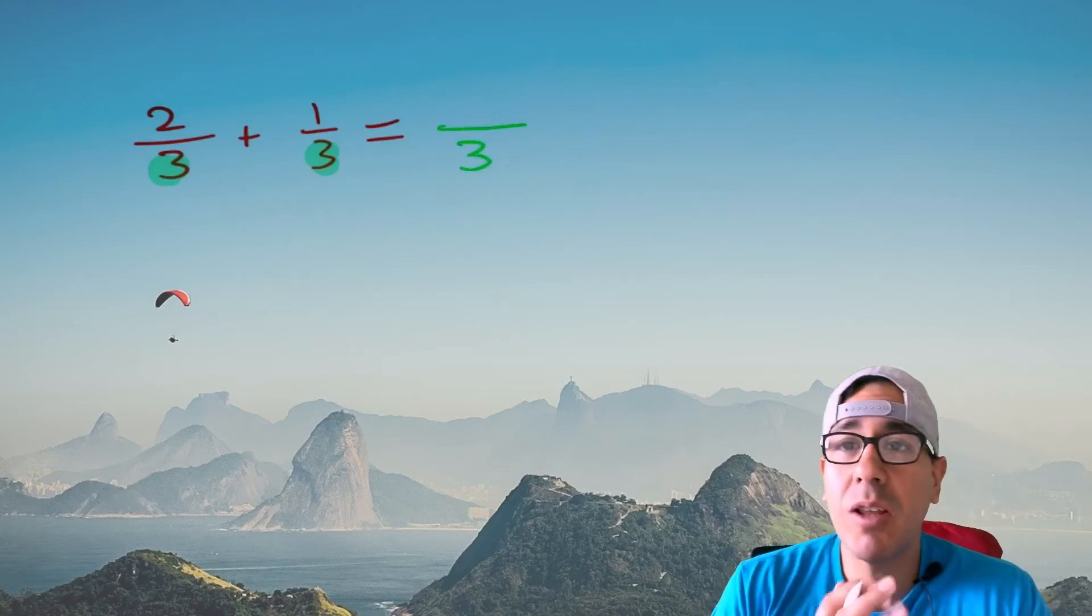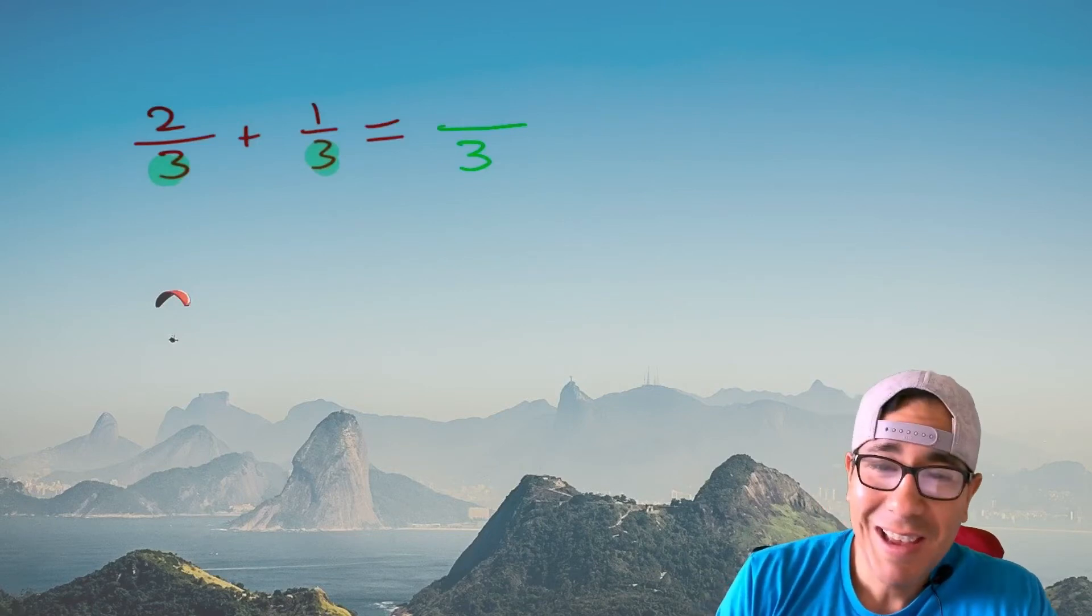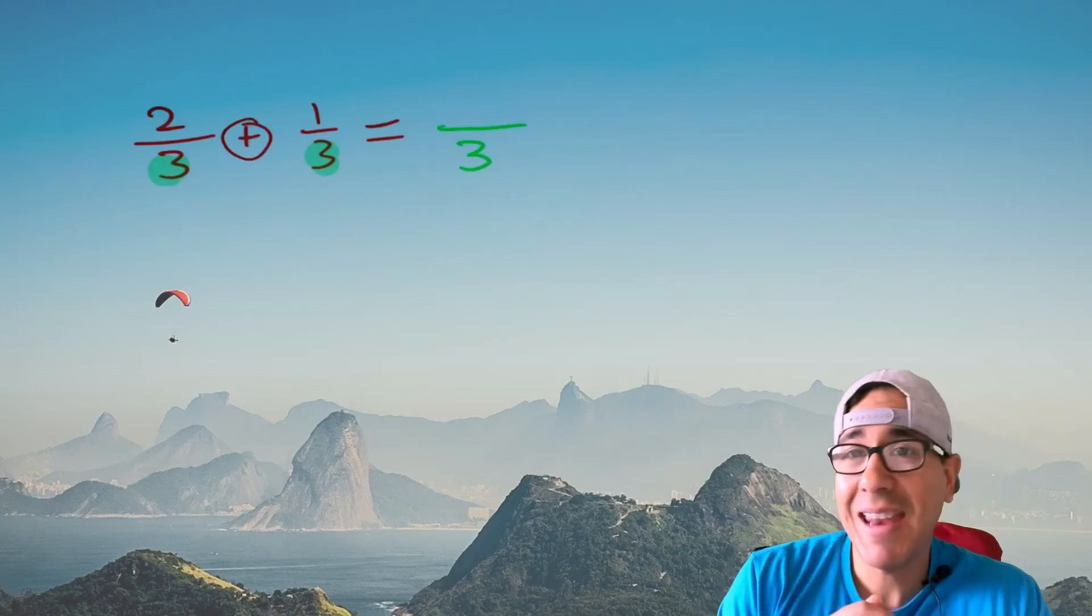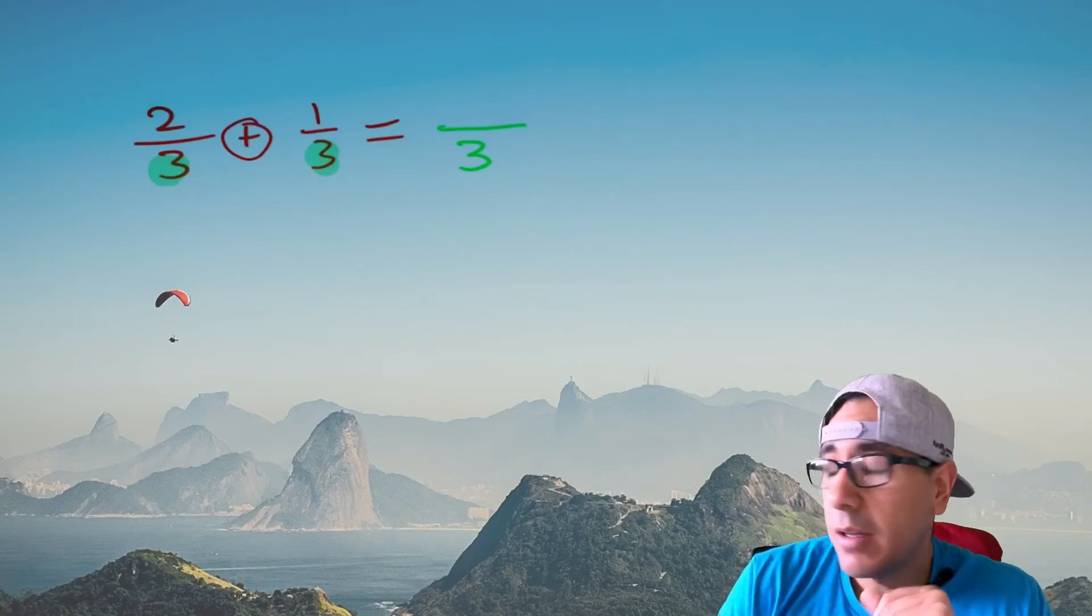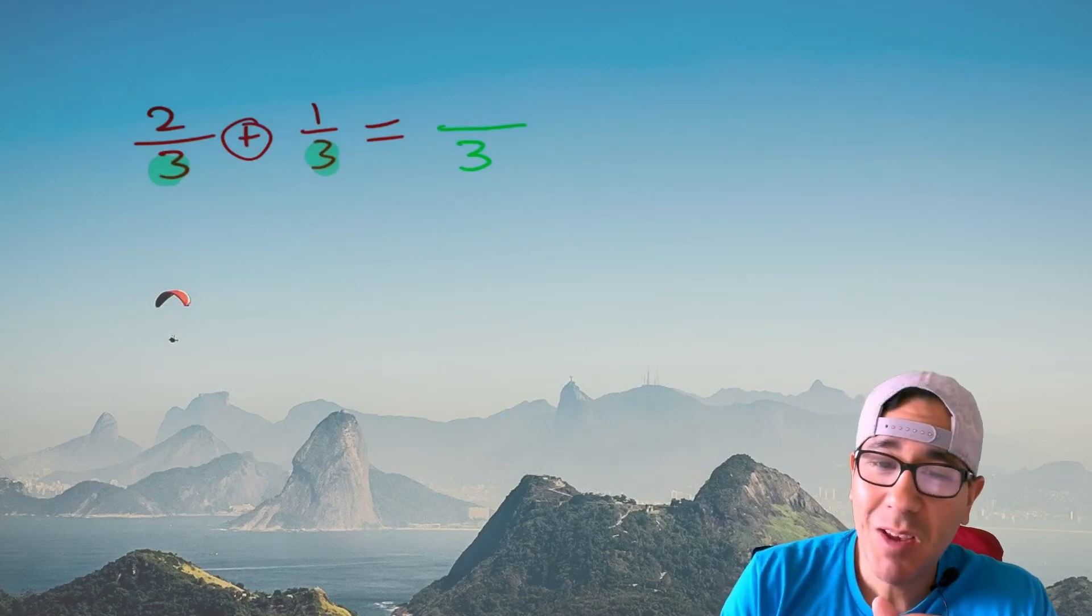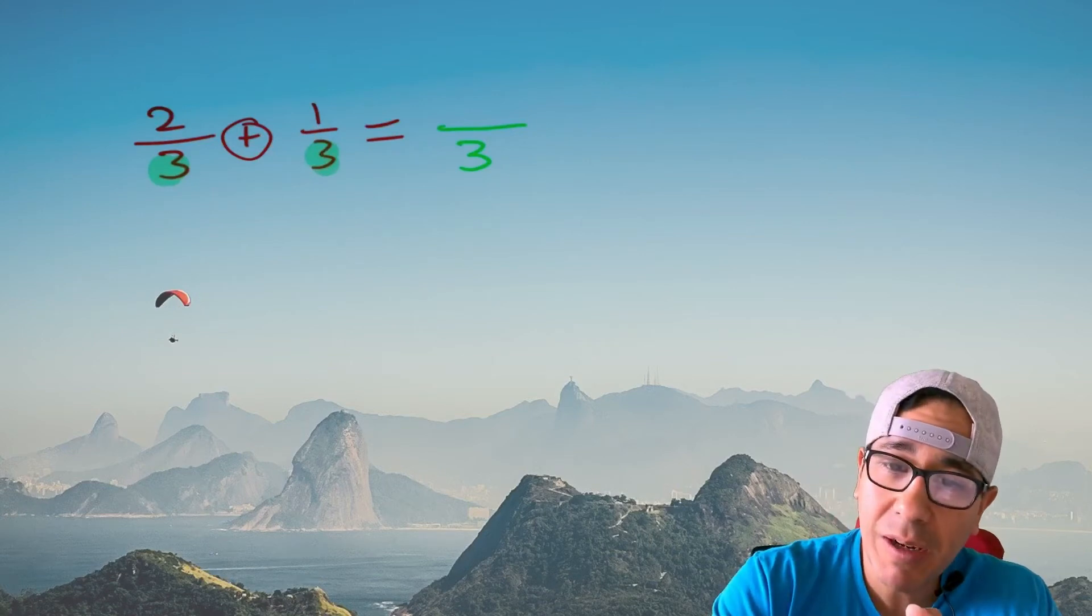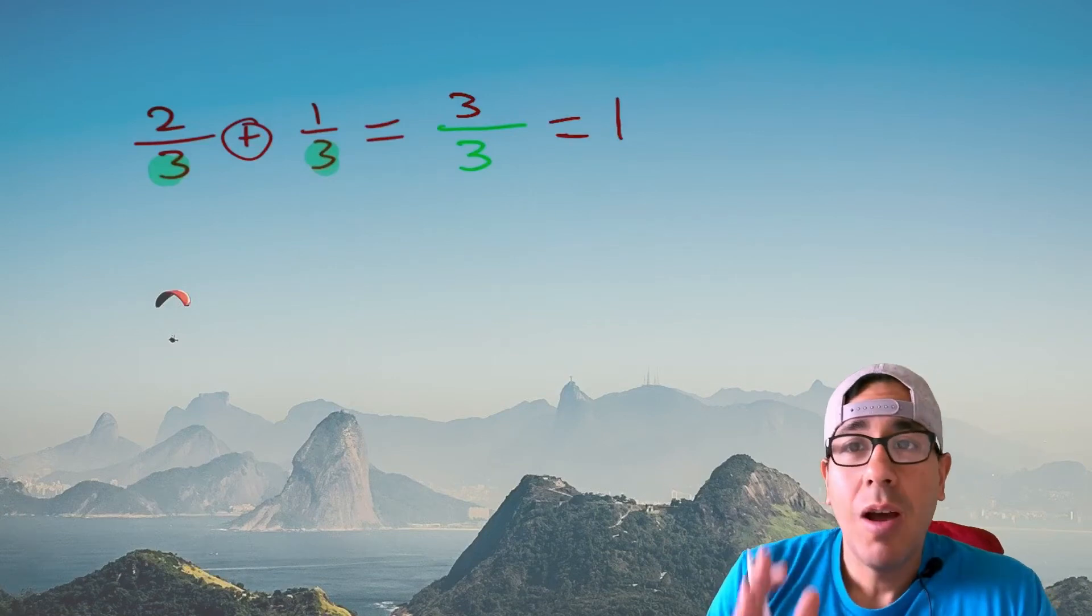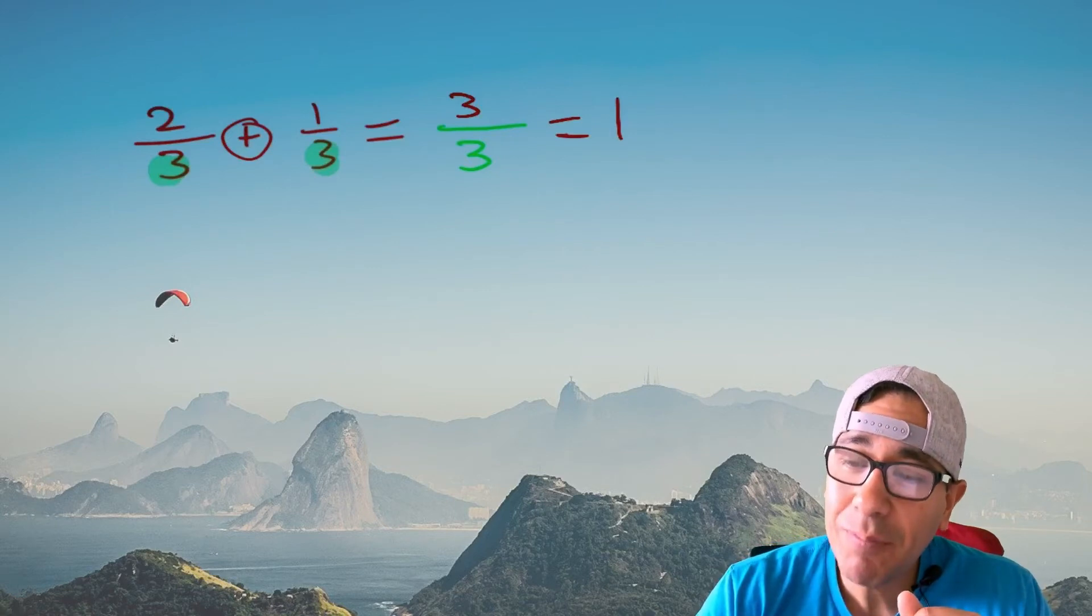And what it says is that number on the bottom stays the same, it's beautiful the way it is. And what we do with the numbers on top is now we can go ahead and add them. But you can only do that when - if you heard that creepy person behind you - only when the denominator is the same. So now we can add the two plus the one which gives us the three, and of course three divided by three is one. We can only add fractions when those denominators are the same.